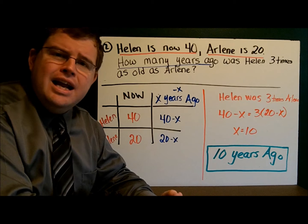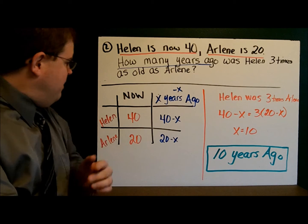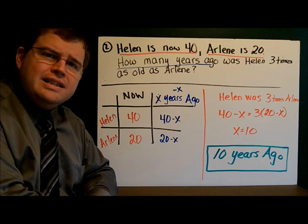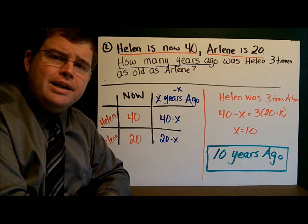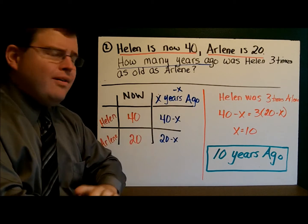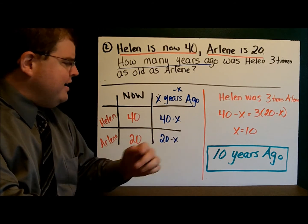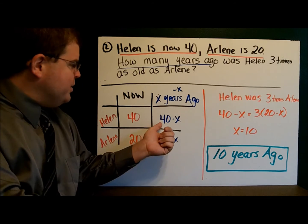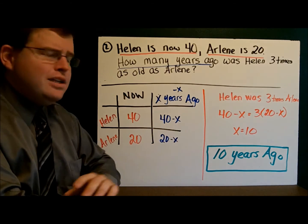Here we have Helen and Arlene. We know that Helen is 40 years old and Arlene is 20, so the table is pretty easy to fill out: 40 and 20. Now the next part is where we have to think for a moment. How many years ago? We don't know, so we call that X. Years ago means in the past, so we subtract: X years ago, Helen was 40 minus X and Arlene was 20 minus X.